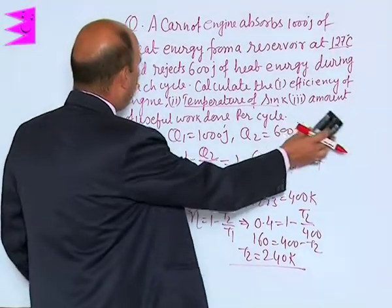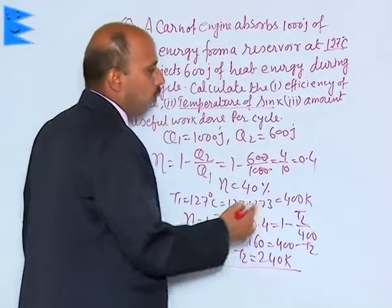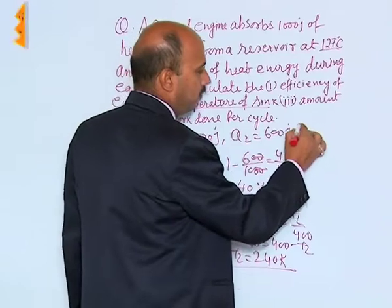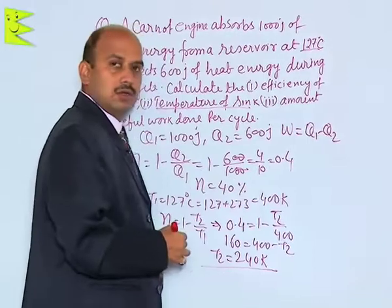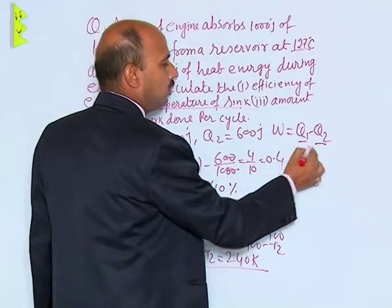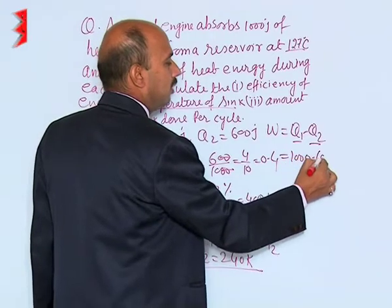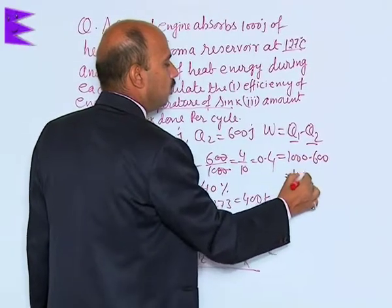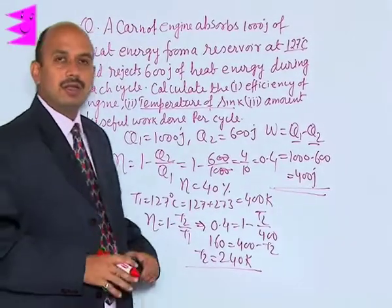We can calculate amount of useful work done. We know work done equals Q1 minus Q2 - net work done. Q1 is given, Q2 is given. That is 1000 minus 600, which is 400 joule. The net work done in one cycle is 400 joule. Thank you.